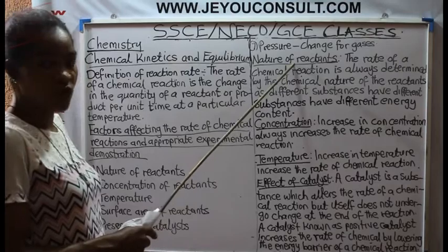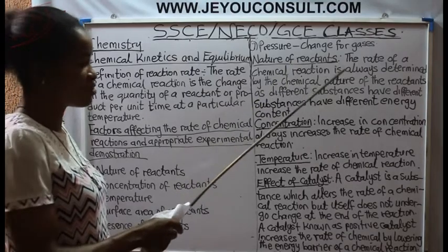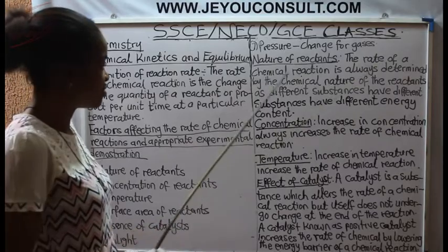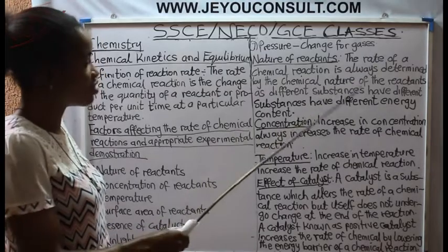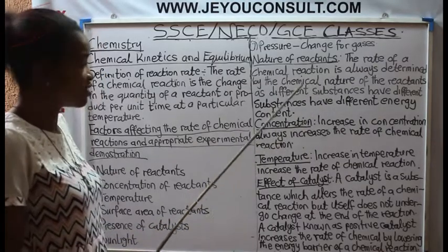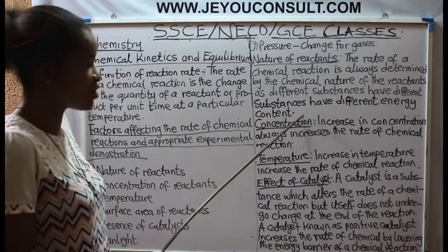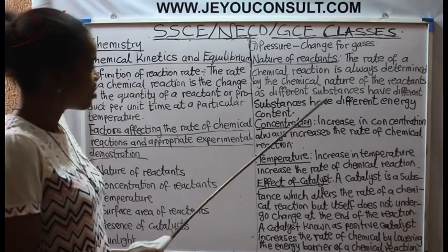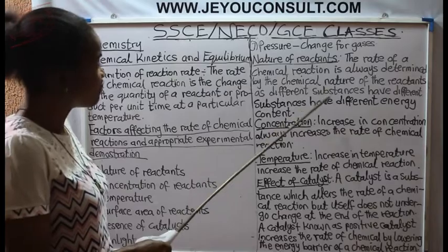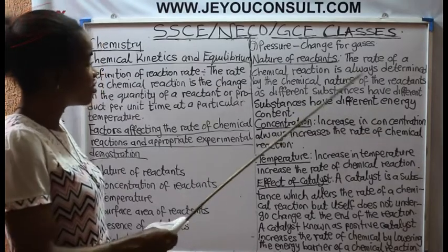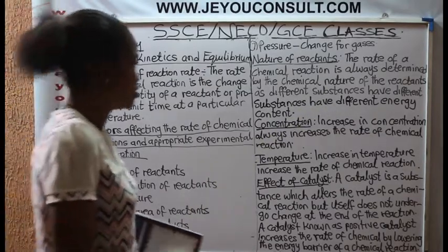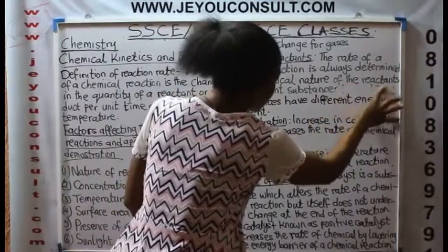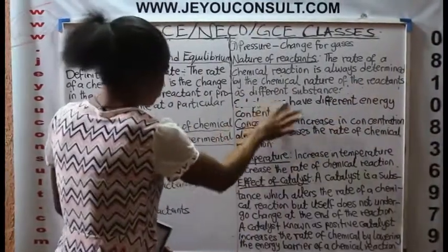The first one: nature of reactant. The rate of a chemical reaction is always determined by the chemical nature of the reactant, as different substances have different energy.